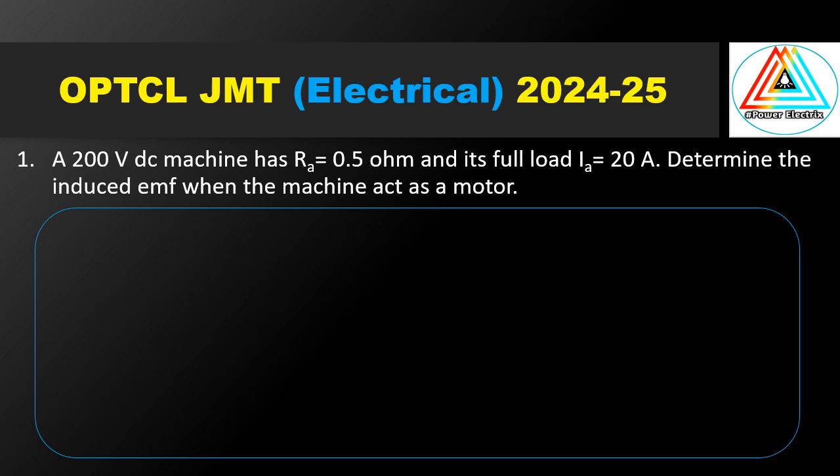Question number 1 — DC machine. The given terminal voltage is 200 volt, armature resistance 0.5 ohm, full load armature current 20 ampere. We need to determine the induced EMF — find the induced EMF when the machine acts as a motor.